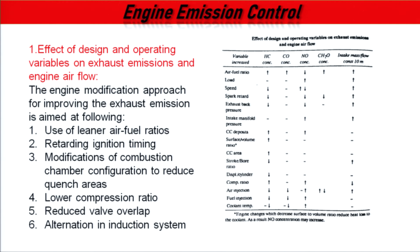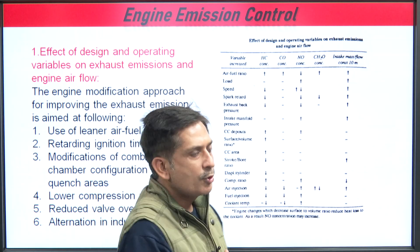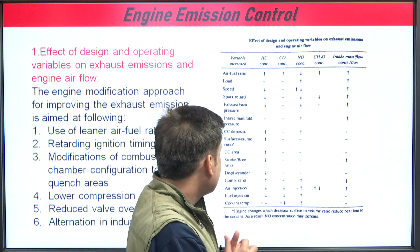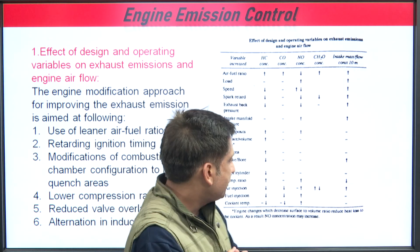Hydrocarbon emission concentration depends on surface-to-volume ratio. Combustion chamber area, stroke and bore, displacement, and compression ratio all affect emissions. Increasing compression ratio increases both hydrocarbon and NOx emissions. Air injection, if increased, provides sufficient oxygen — hydrocarbon emission is lower, the mixture becomes leaner, and NOx and CO emissions are reduced as carbon is converted to CO₂. Increasing coolant temperature decreases hydrocarbon and CO emissions but increases NOx.